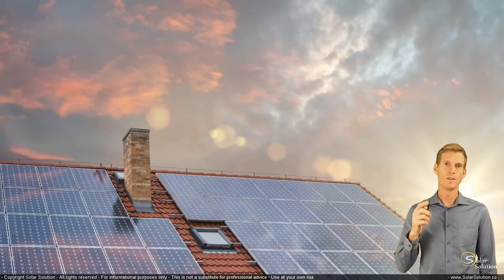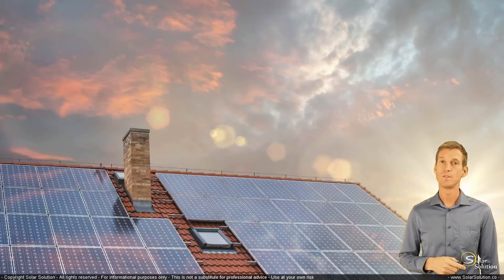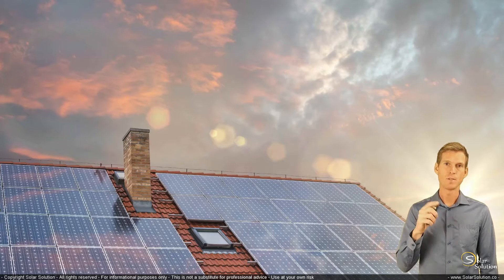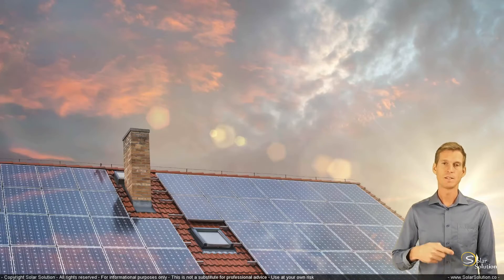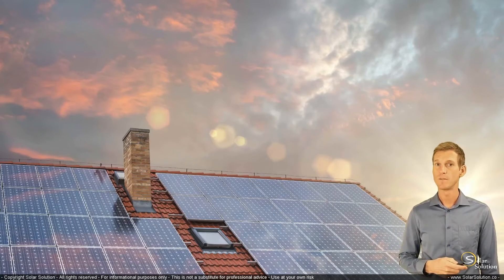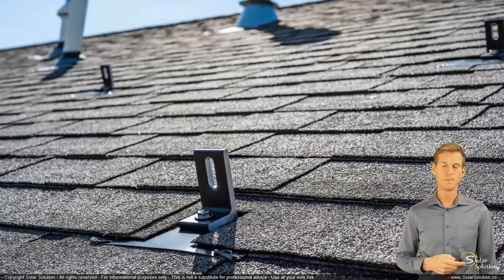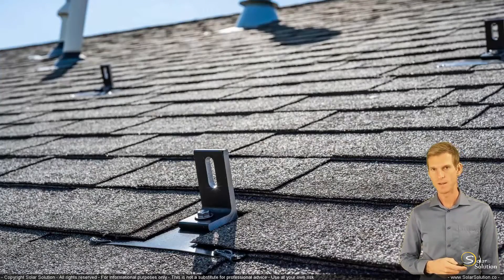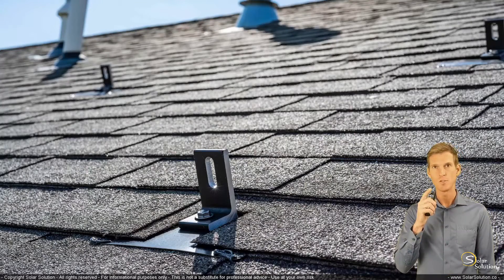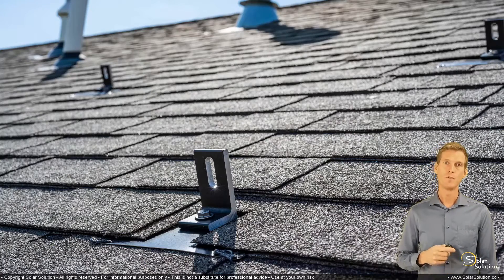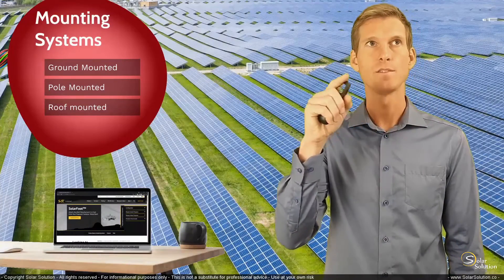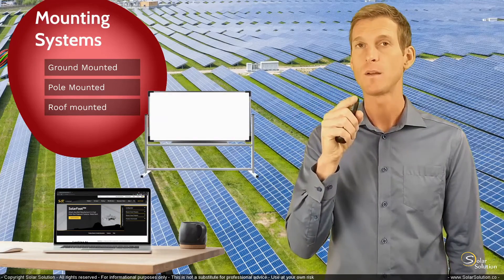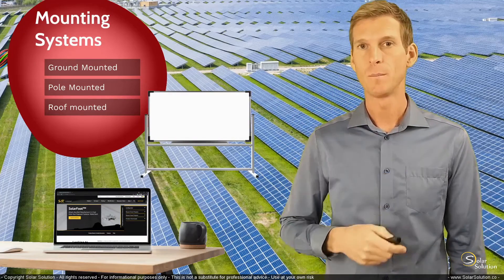A roof mounted system is probably what you'll use, whereby your modules are mounted straight to the frames and then the frames are attached to your roof. The way in which the frames are attached to your roof depends on what type of roof you have and your preference — there are plenty of different brackets available. Let me run you through a theoretical case of the different components you might come across when shopping for mounting systems.